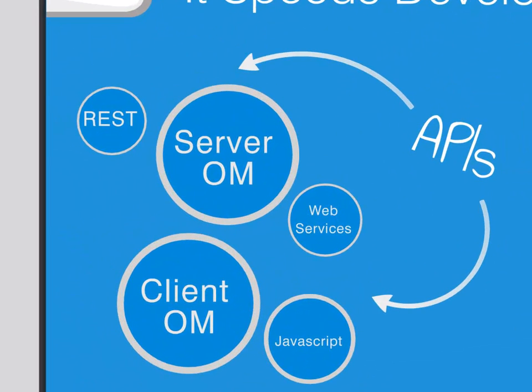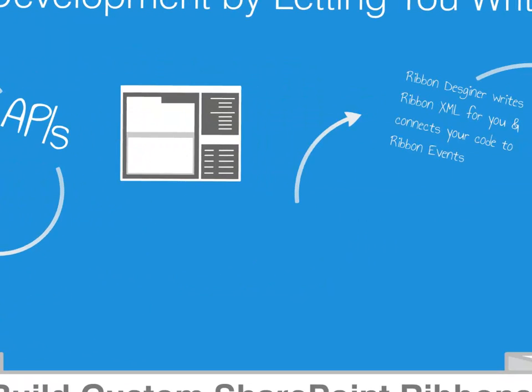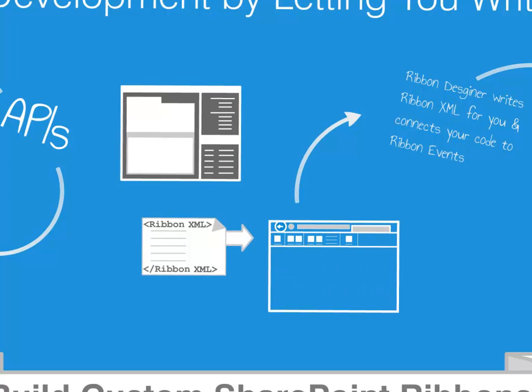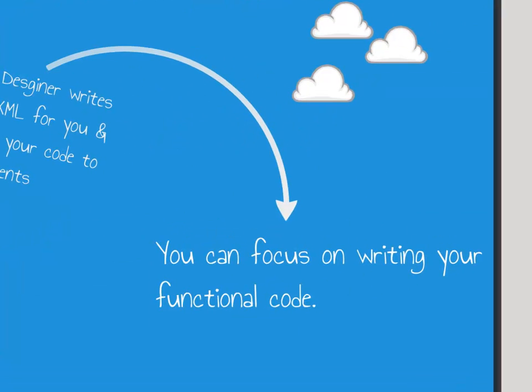You write your business logic against the various SharePoint object models and APIs. Then the Ribbon Designer outputs the Ribbon XML required for display within SharePoint. With the complex task of producing Ribbon XML suitable for SharePoint handled, you can focus on writing your functional code that implements your business rules.